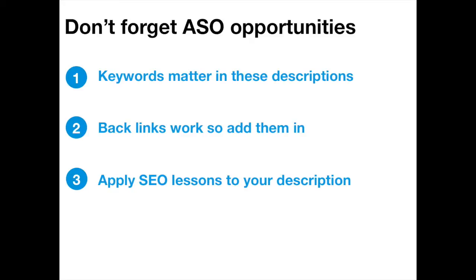When it comes to Google Play specifically, there are three extra things to consider, all related to app store optimisation opportunities. Because there isn't a keyword field on Google Play, you've got to sprinkle keywords throughout the description. Apply the major SEO principles: put the main keyword in the title, in the first line, and sprinkle it at around 2–5% of the text. For other potential keywords you want people searching, aim for around 1–2%.